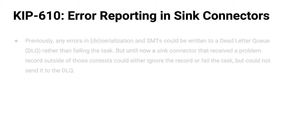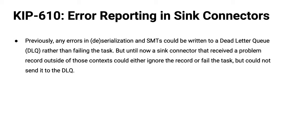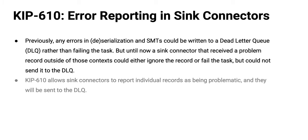KIP-610 gives us more flexibility with dead letter queues in Kafka Connect. Previously, if there was a problem processing an SMT or deserializing on the way out, you could write that message to a designated dead letter queue topic. But if there were problems elsewhere in the syncing chain, the dead letter queue wasn't an option. Now KIP-610 says any problem dealing with a message in a sink connector — whether in those two parts or somewhere else in the chain — you can still write it to a dead letter queue.